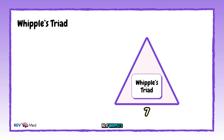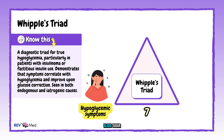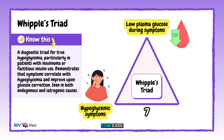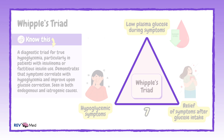Number seven: Whipple's triad for diagnosing hypoglycemia — symptoms of low blood sugar, a confirmed low plasma glucose, and symptoms of relief after glucose intake. Classic for insulinoma and sulfonylurea use.